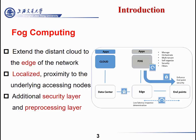The sensors belonging to a fog depend on their position. If a sensor moves from one position to another, it will change the fog it belongs to. Fog also has an additional security layer and a processing layer.